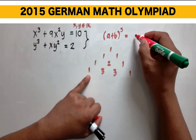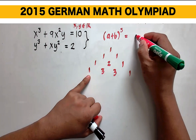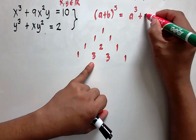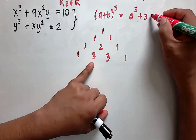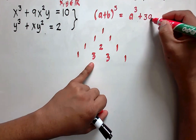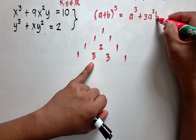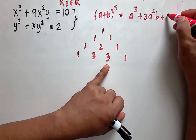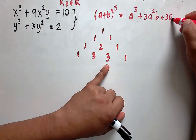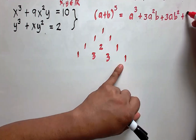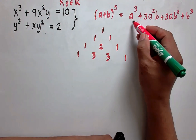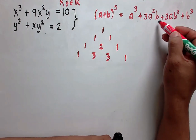The first coefficient is 1, so we have a cubed, plus 3 as the coefficient times the first term a squared times the second term b to the first, plus 3 again times a to the first times b squared, plus b to the third. So this is the expansion: a cubed plus 3a squared b, and so on.